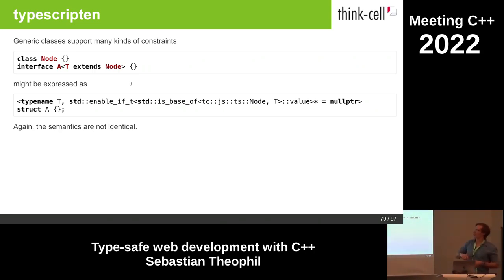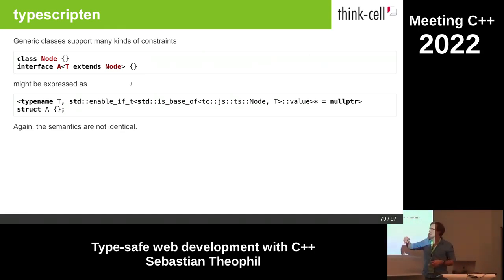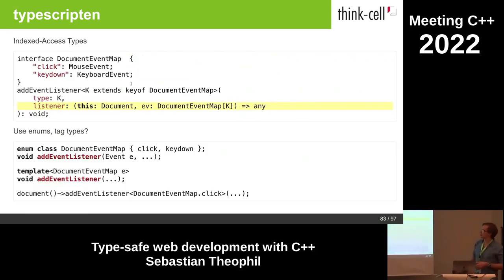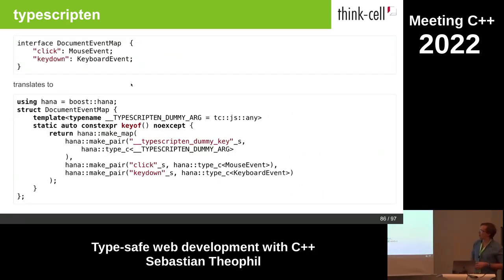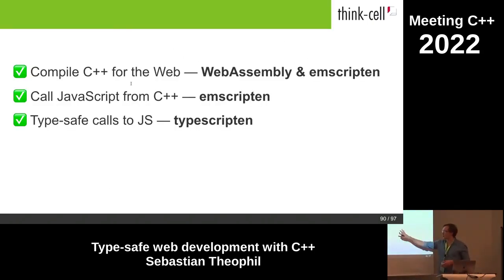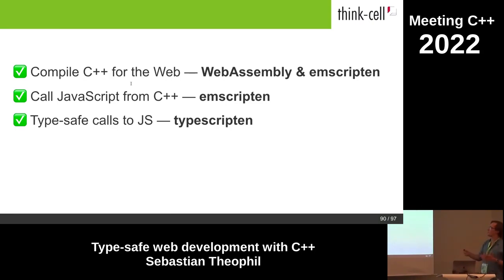Because of the differences in typing, this is not quite the same: in TypeScript, a constraint would just require that T has the same properties as a node, whereas in C++ we actually require an inheritance relationship. There are also index access types, which are a pretty special JavaScript thing. We could implement them using some Boost.HANA magic, but the important thing is that we can cover the important cases: generics and function calls.